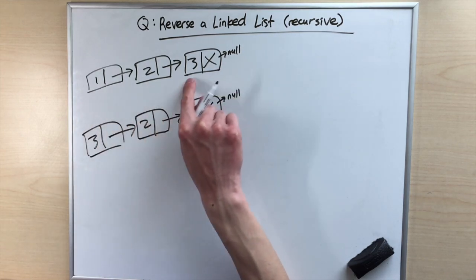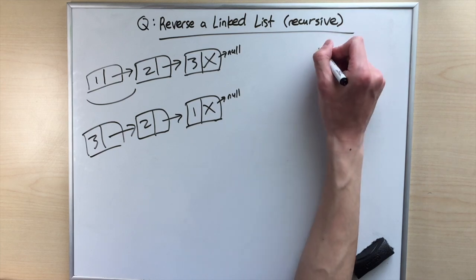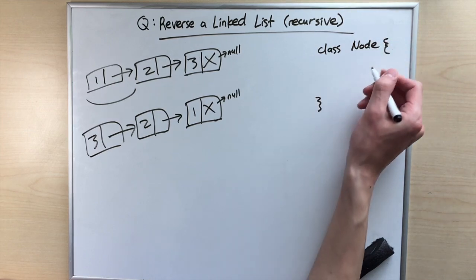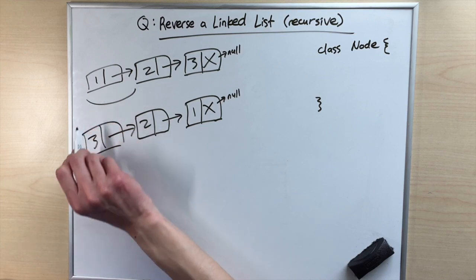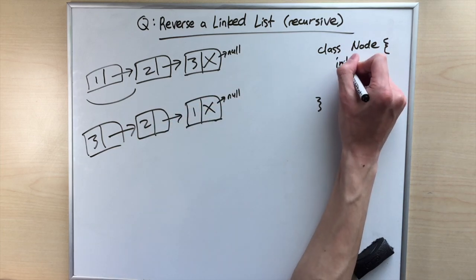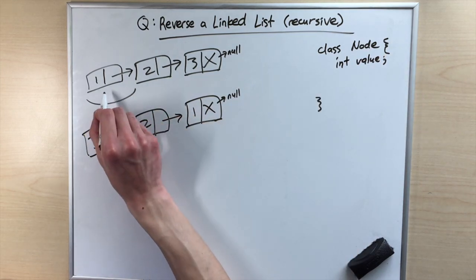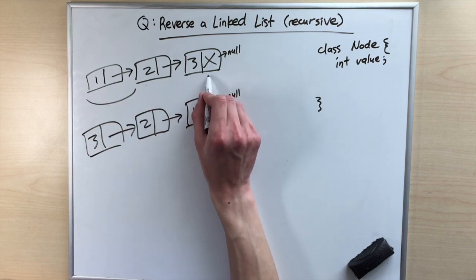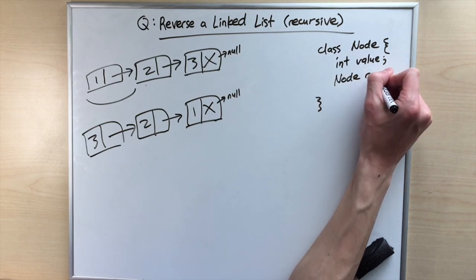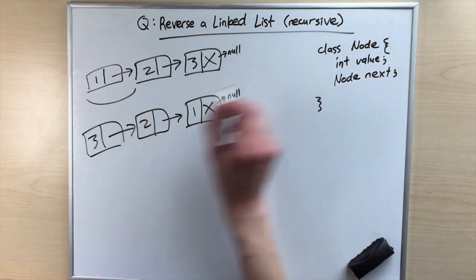A linked list is just a series of different nodes, and we can describe each node using the node class. Inside the node class, each node has a value — for example, 1, 2, 3 — so we know it has an int value. We also know that each node points to another node, so it has a pointer of type node, and we can call this pointer next. This next pointer allows us to point to another node.